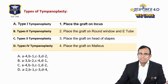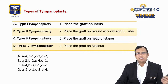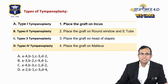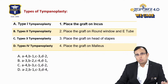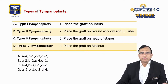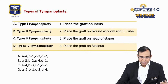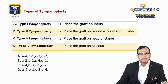The first question is a simple match-the-column question on types of tympanoplasty — what is done in which type. In the first column there is Type 1, Type 2, Type 3, Type 4 tympanoplasty. In the second column: place the graft on the incus, place the graft on the round window, place the graft on the head of stapes, and place the graft on the malleus.